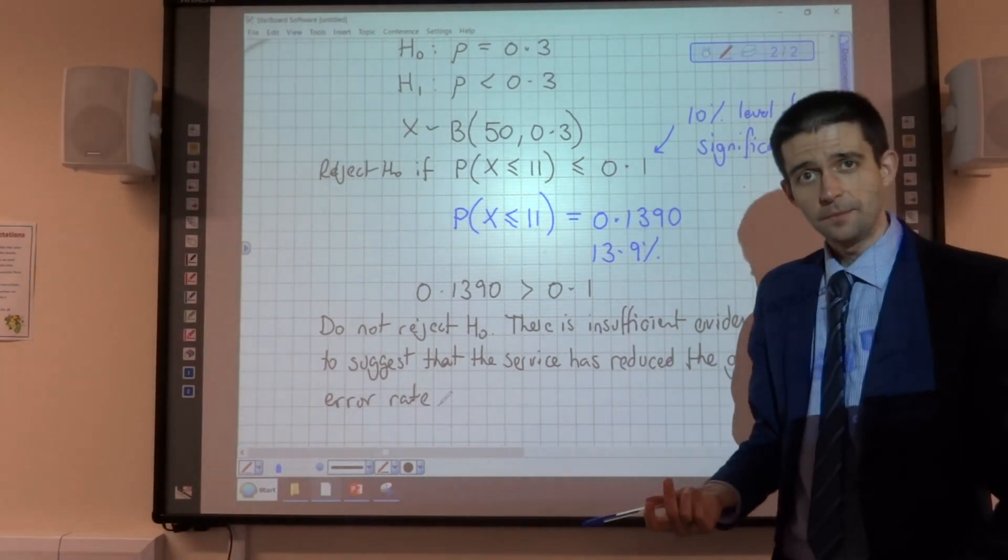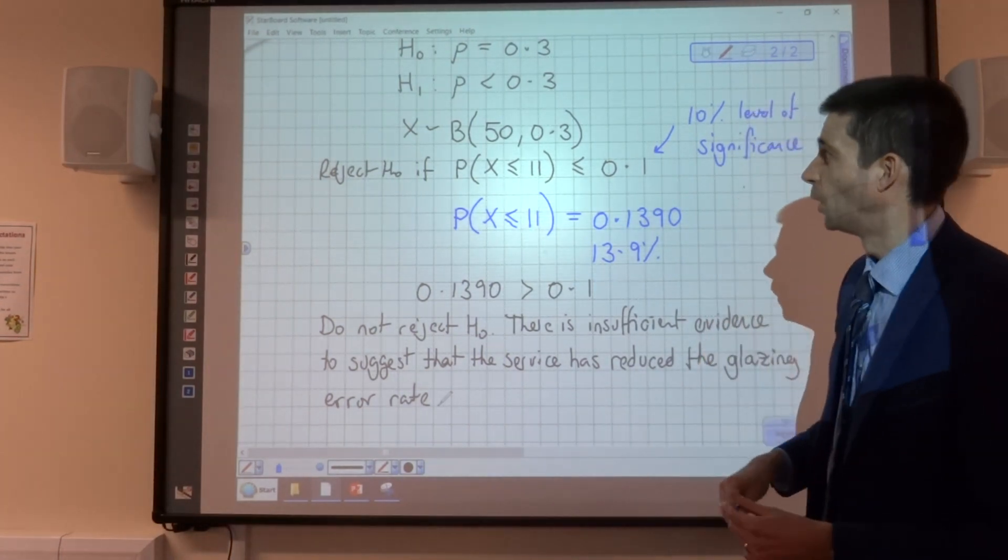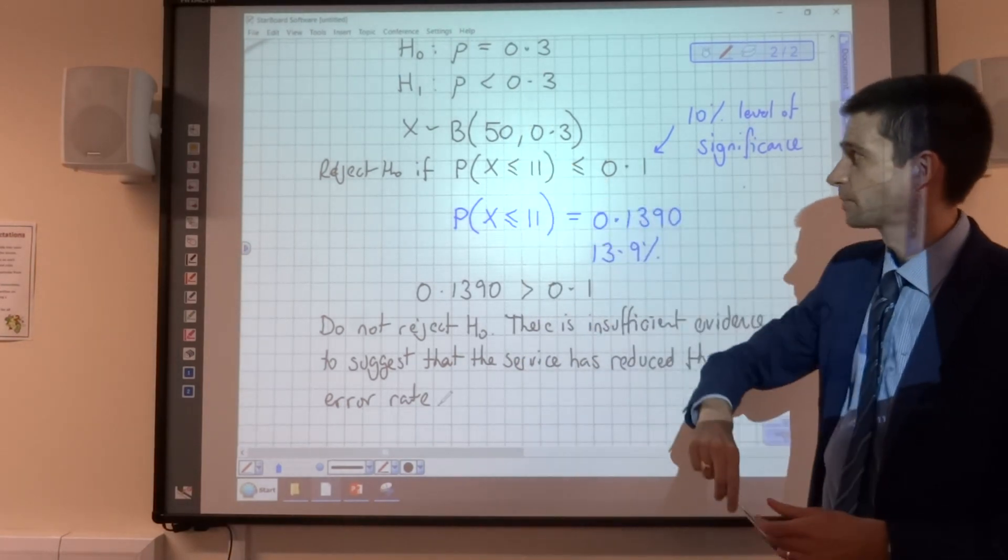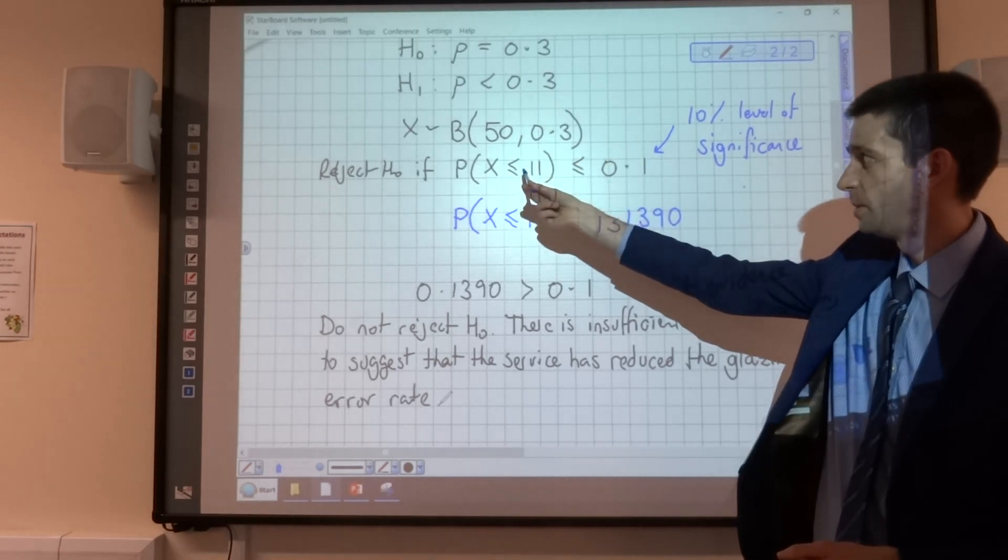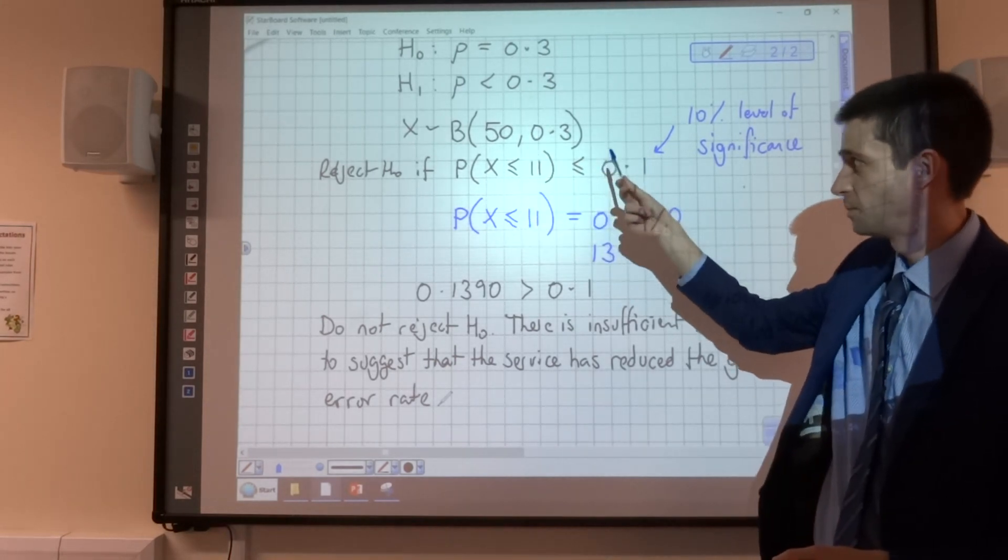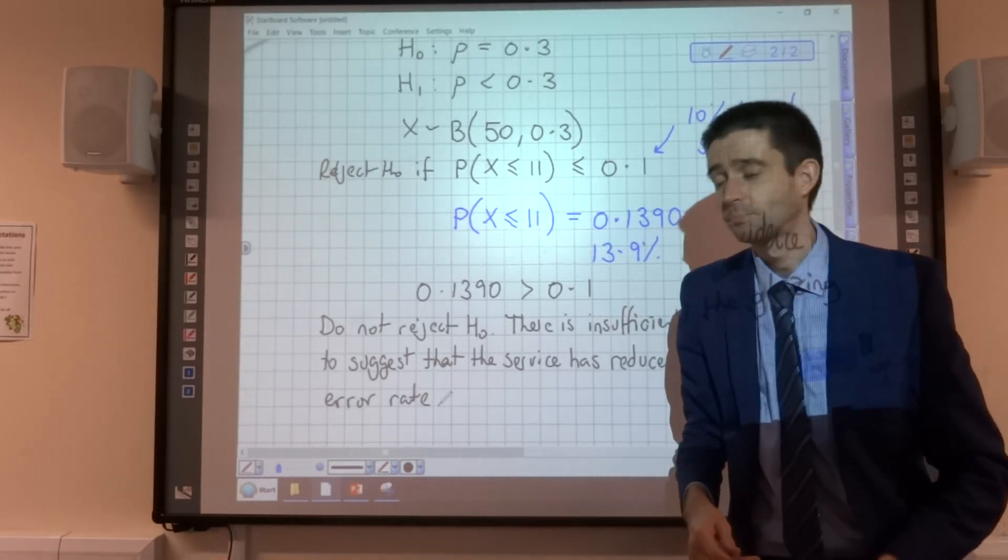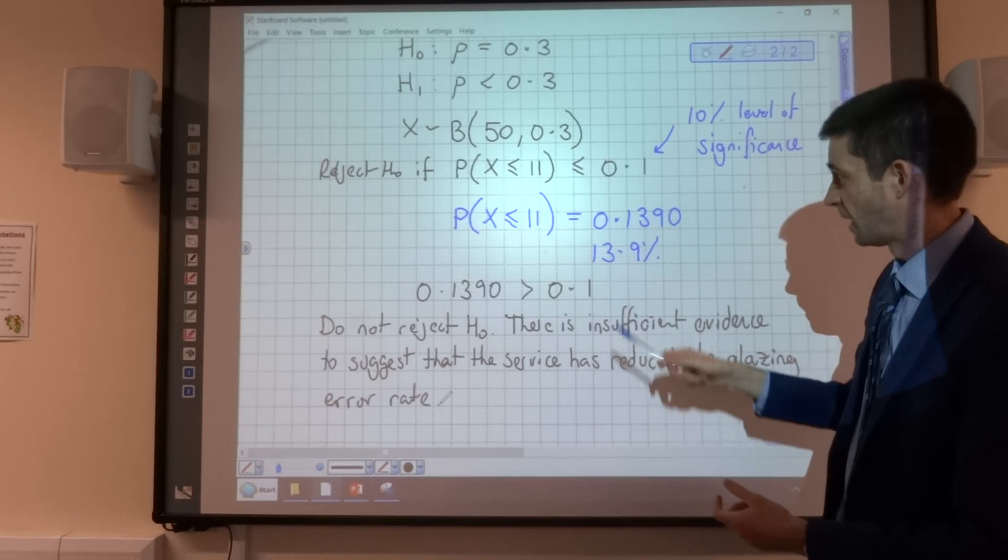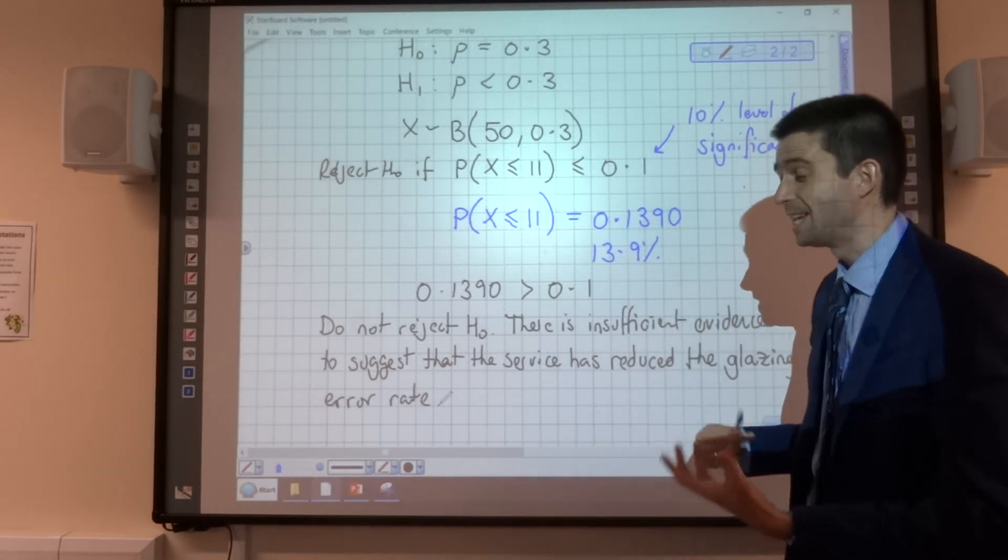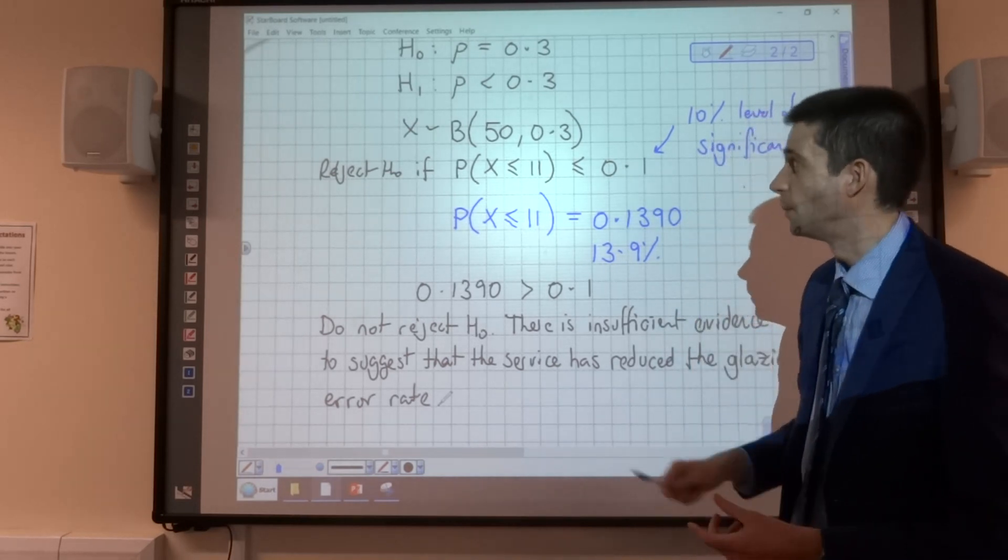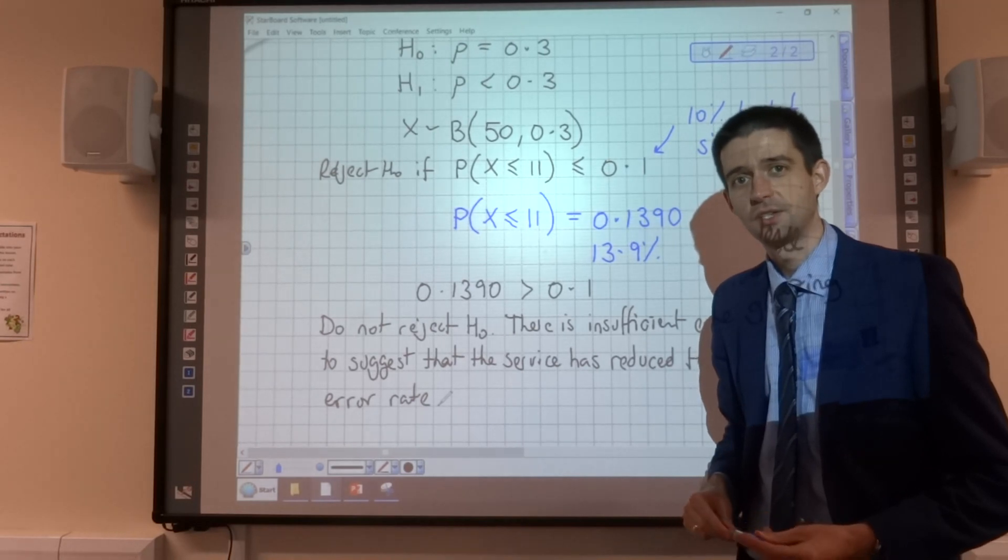So, we had our assumed probability, based on the fact that 3 out of 10 were faulty. We had our sample of 50, and 11 of them were faulty. We said, OK, if the probability of 11 or fewer being faulty is less than 10%, that gives us enough evidence to doubt our original assumption about the probability. However, when we worked it out, we found that the chance of it happening was greater than 10%, and therefore, it isn't unlikely enough to have happened that we doubt 0.3. So, we do not reject the null hypothesis in this case.